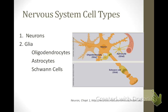Neurons are cells that are specialized to transmit information through both electrical and chemical means. The first section of the course will focus on how neurons use ion gradients to propagate signals in the form of action potentials. The second section will focus on how neurons use chemical neurotransmitters to pass along their signals to other cells.